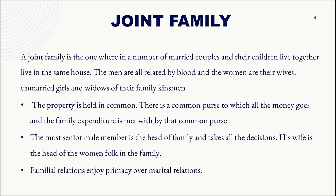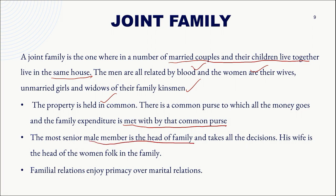A joint family is one where a number of married couples and their children live together in the same house. The men are all related by blood. Property is held in common, and there is a common purse for all income and family expenditure. The senior most male member is typically the head of the family and makes all decisions. Note: the head of the family is the person who takes major decisions — not necessarily the eldest, male, or highest-earning member.